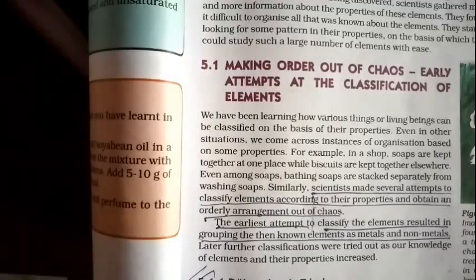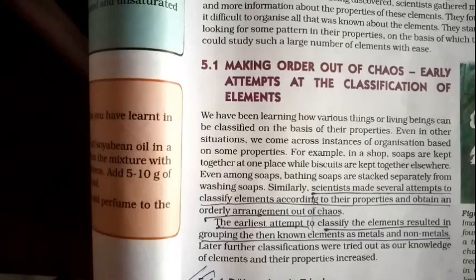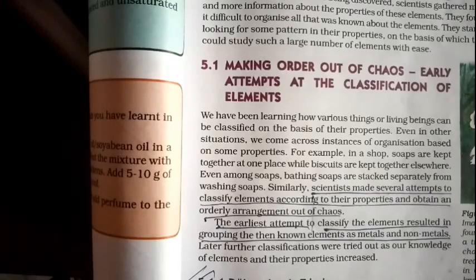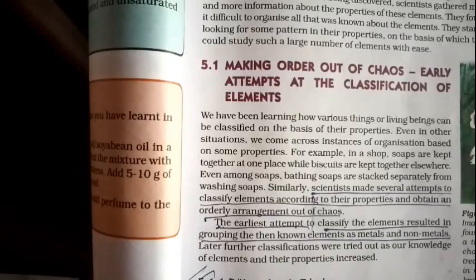The first and earliest attempt at classification was that elements were divided as metals and non-metals. Then scientists came up with further classification systems. The first such scientist was Dobereiner, and according to his classification, he proposed Dobereiner's Triads.